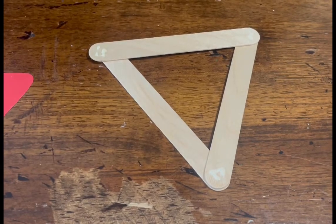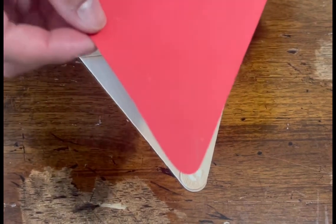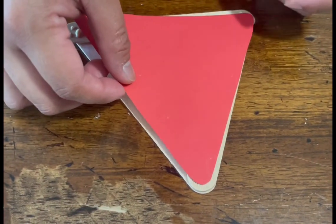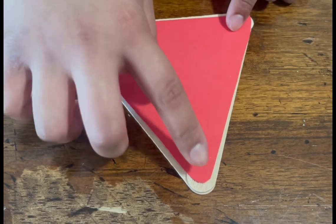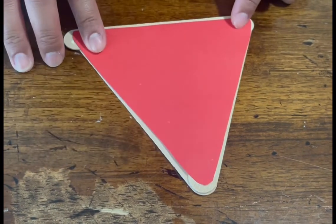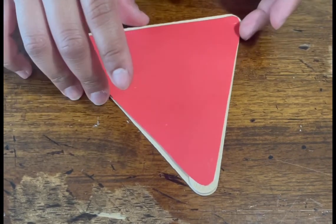And then we're gonna grab our construction paper triangle. This will serve as the body of the ladybug. Press it like so, so everything will stick together, and then we're gonna flip it.